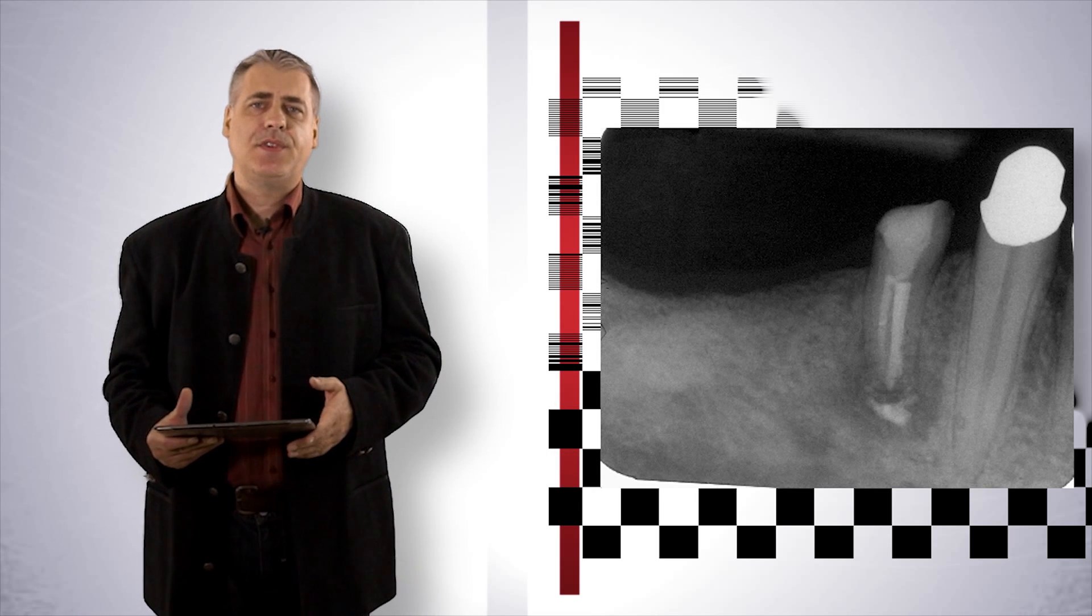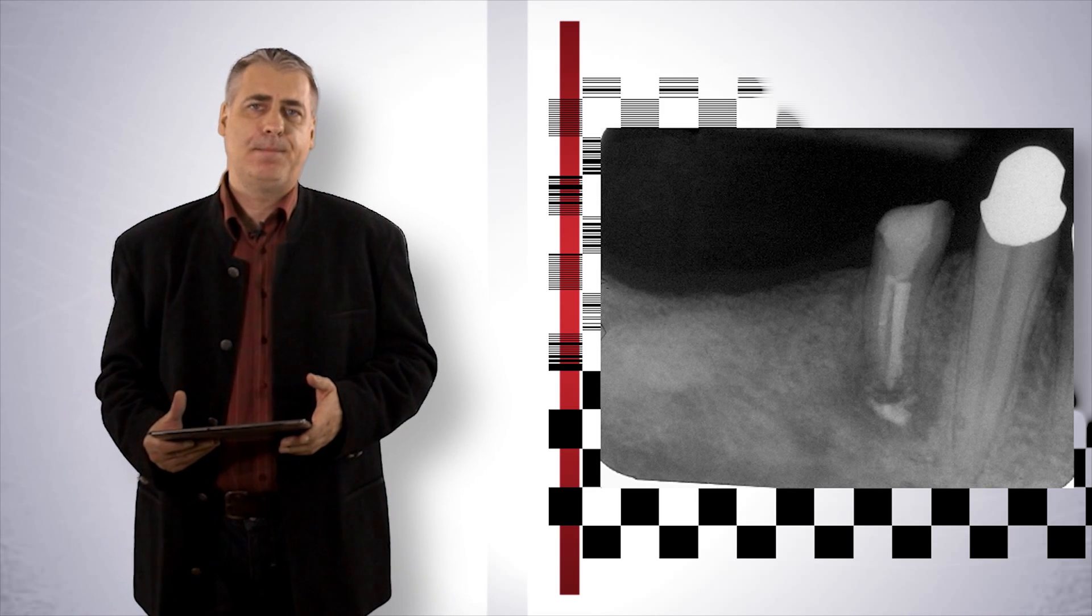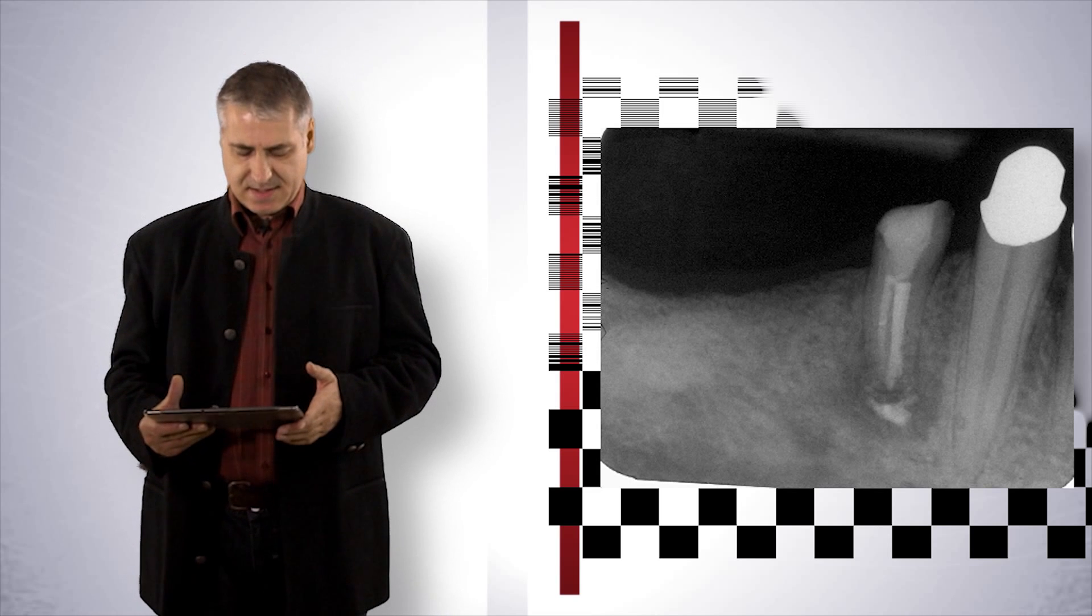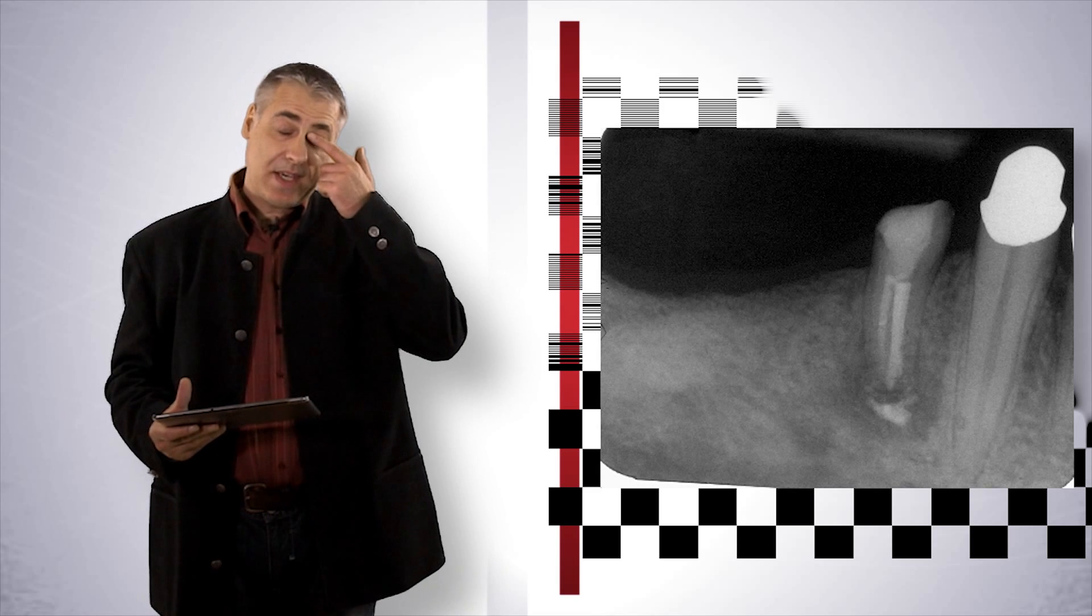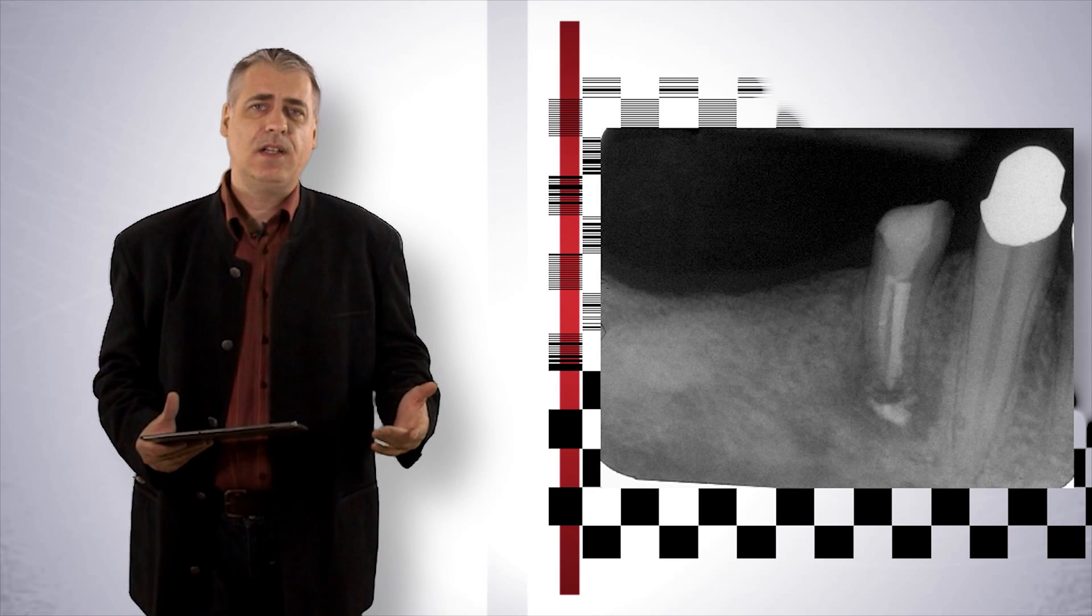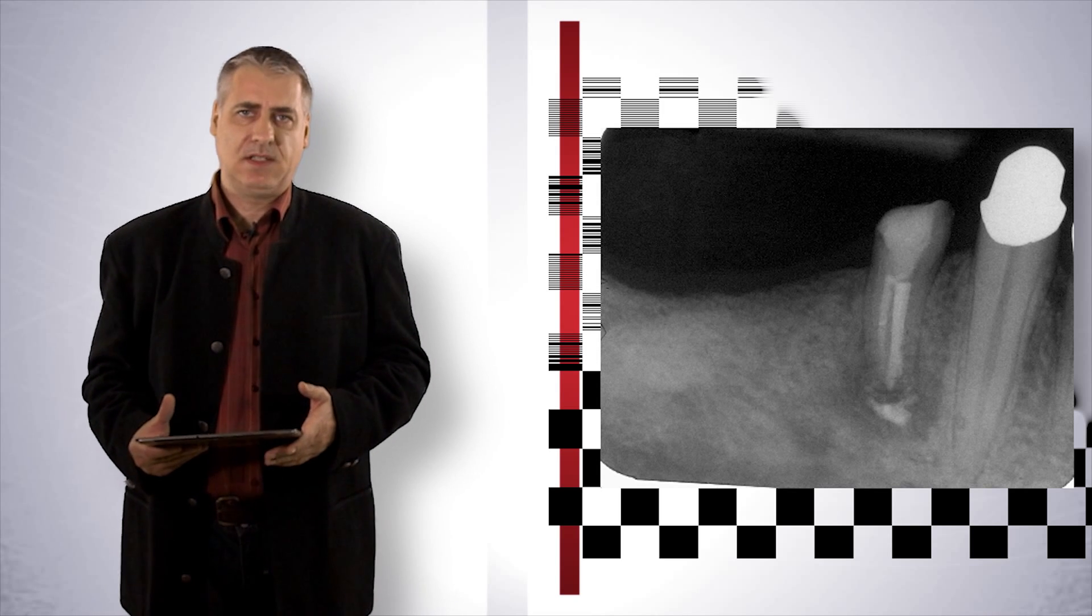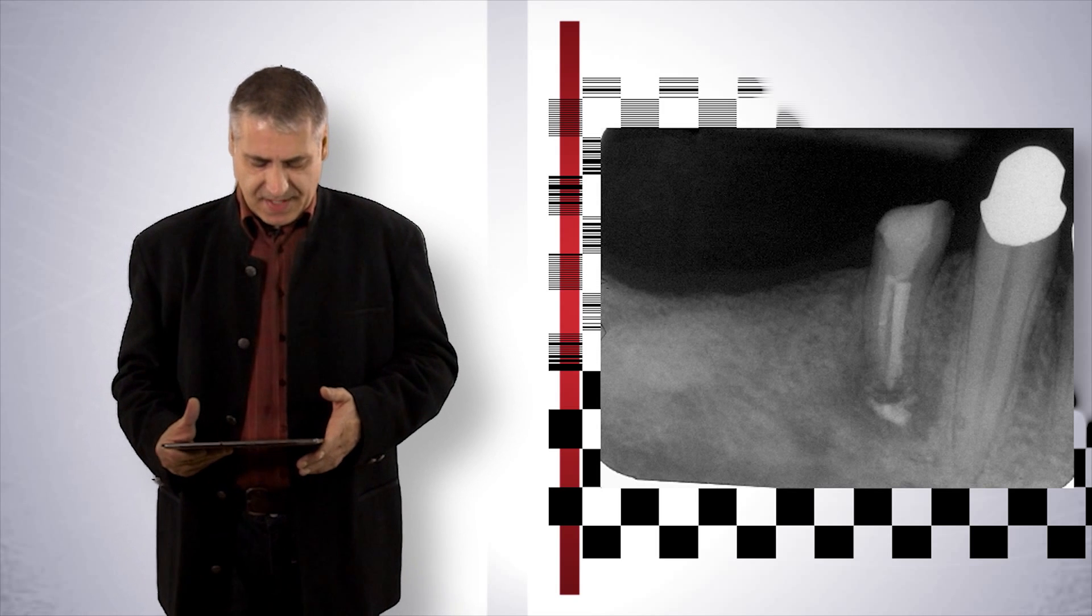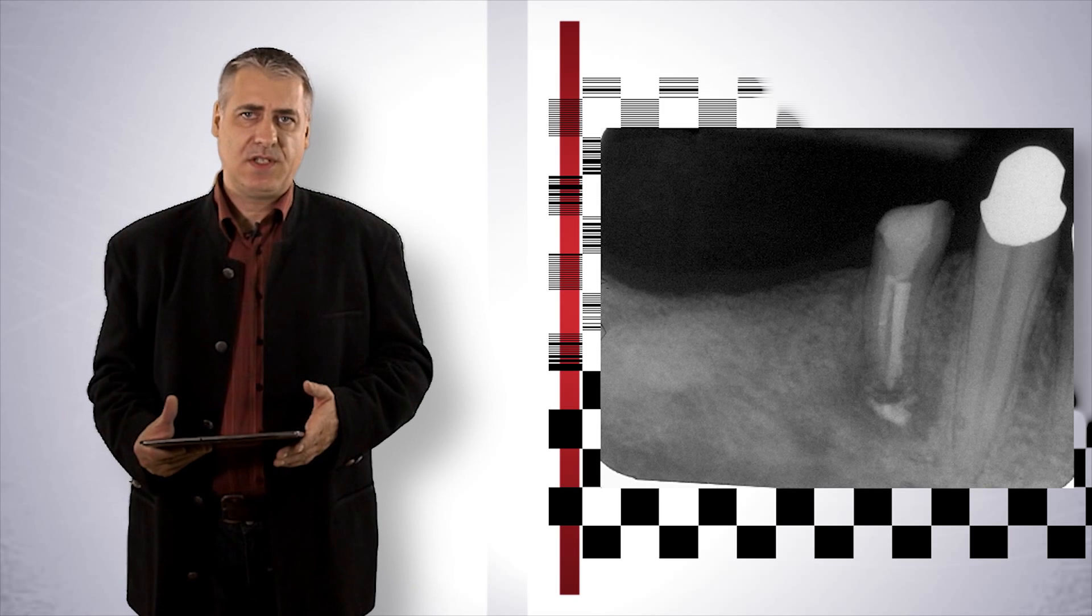After a final copious irrigation an MTA plug was placed at the end of the buccal canal because it had this wide open apex. Then gutta-percha was placed with warm vertical condensation in the lingual canal and I used a squirting technique in the buccal canal after the MTA was set. The access cavity was then filled with a dentin adhesive filling material.